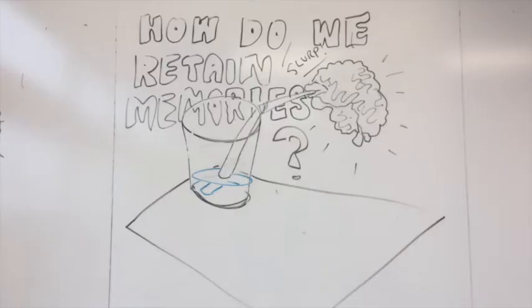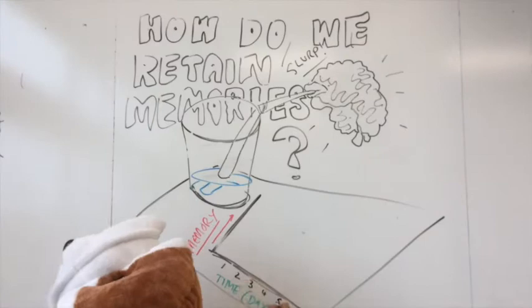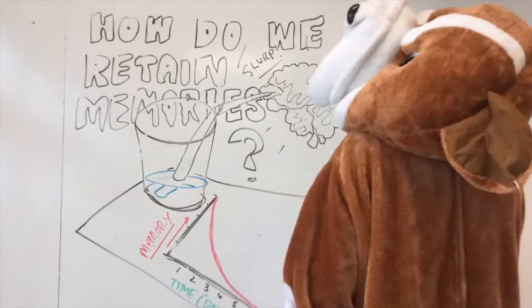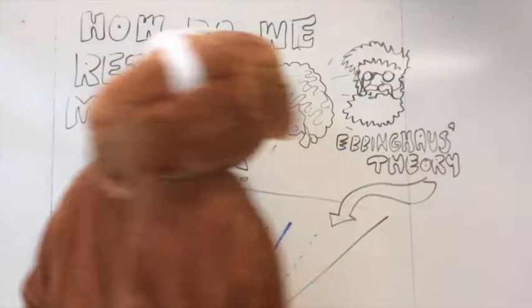Ebbinghaus, let's explain how this works. So, the forgetting curve. What Ebbinghaus demonstrated was that we rapidly lose information if we do not revisit it. We can drop down to less than 50% of remembering things in just a few days time.